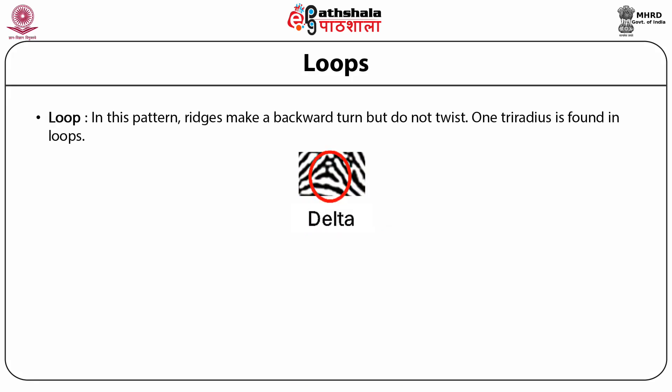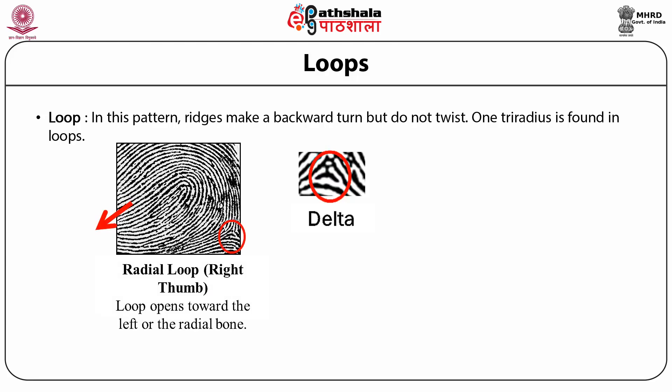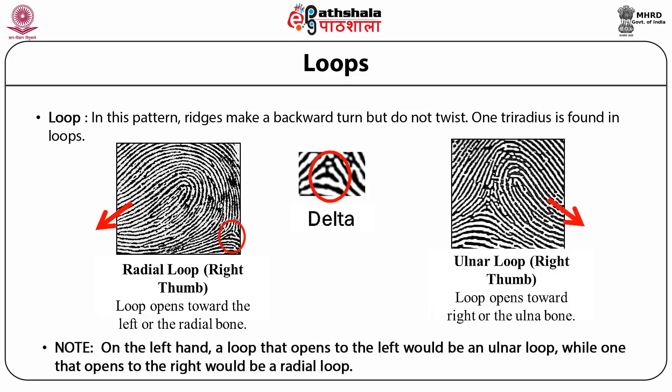Loop: in this pattern, ridges make a backward turn but do not twist. One tri-radius is found in loops. There are two types: radial loops, which are loops that flow toward the radius bone of the hand, or the downward slope of the loop is from the direction of the little finger towards the thumb; and ulnar loops, which are loops that flow towards the ulnar bone of the hand, or the downward slope is from the direction of the little finger towards the little finger side.